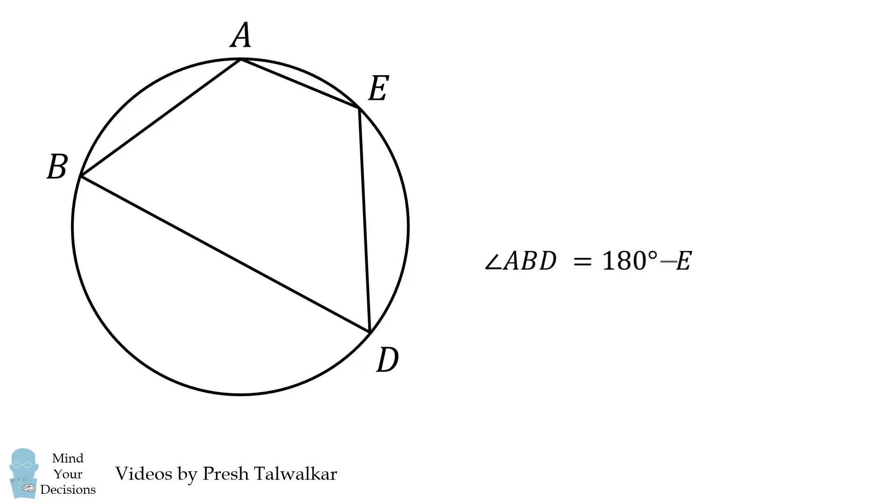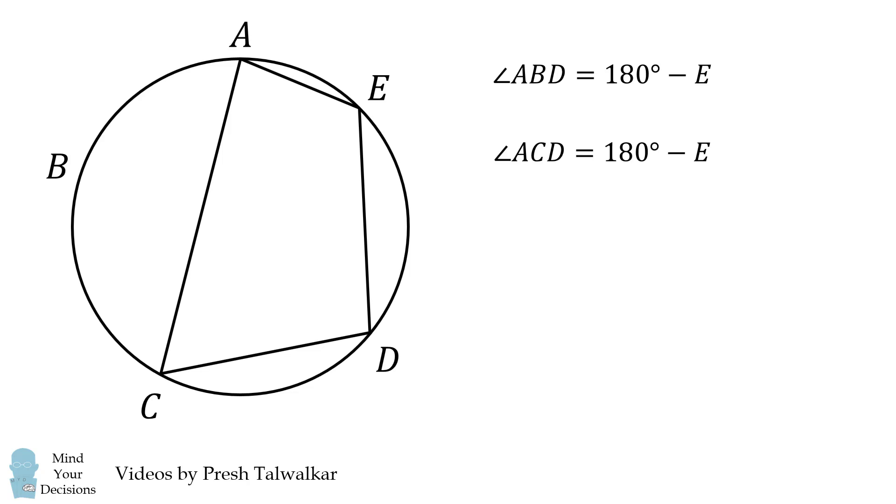We subtract angle E from both sides, and we get the equation that we want. Now we can do a similar sort of thing in this cyclic quadrilateral. Angle ACD will be equal to 180 degrees minus E. That's because opposite angles in a cyclic quadrilateral are supplementary.